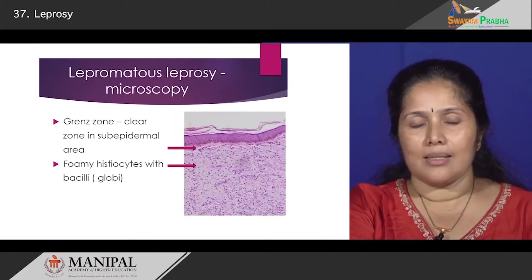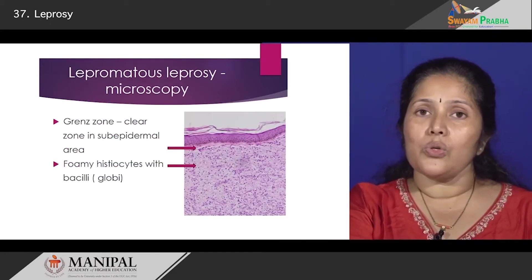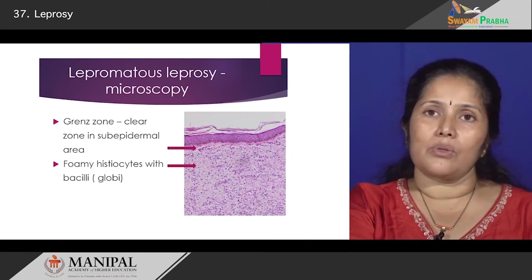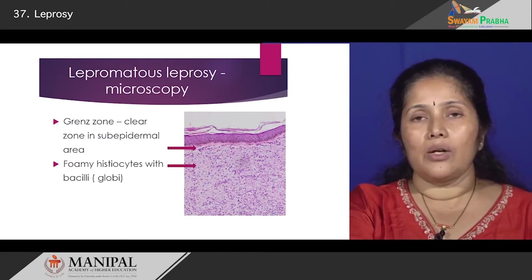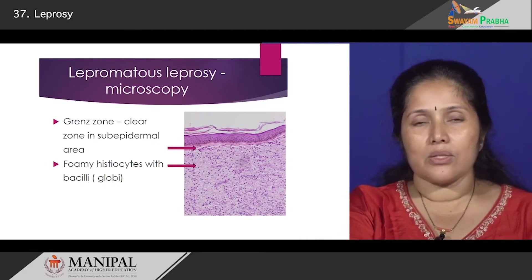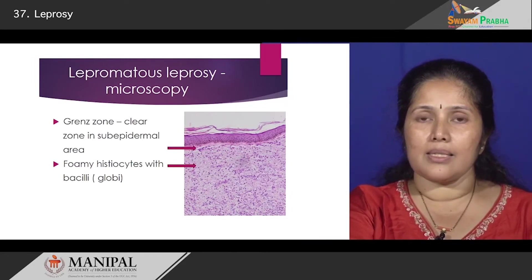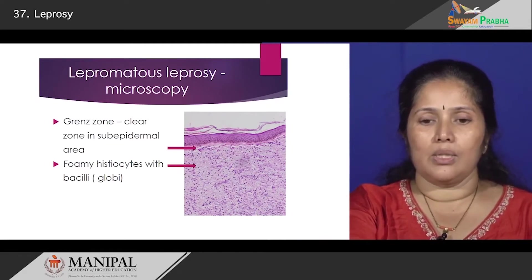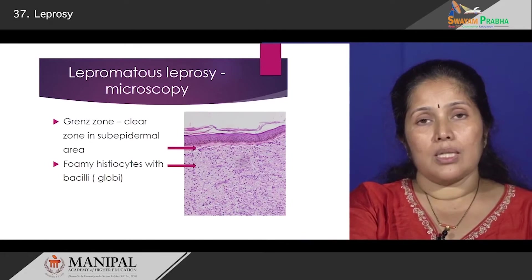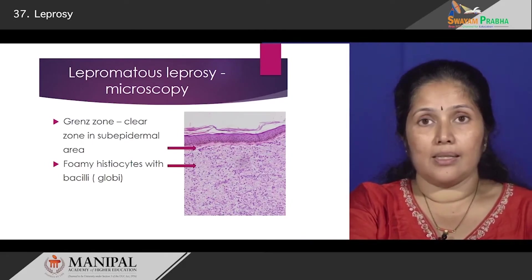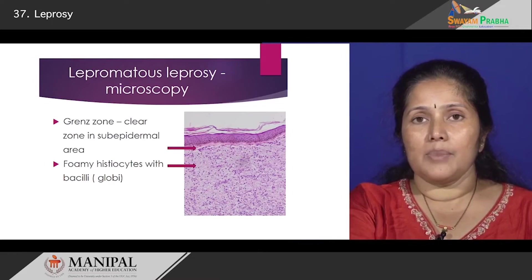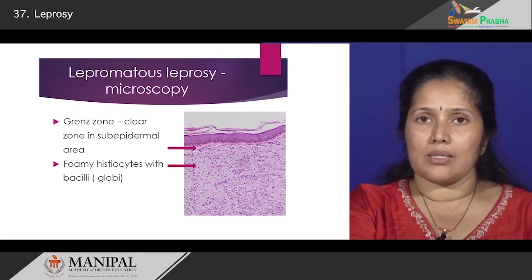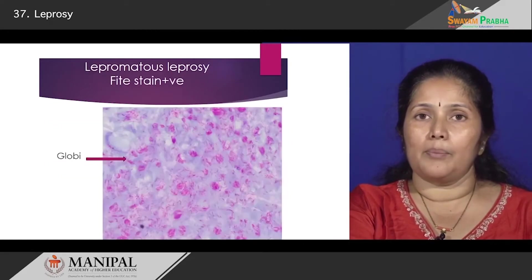What do you see in the microscopy? As this picture shows, we have what is known as a grenz zone — a clear zone between the lesion in the dermis and the epidermis. Below the grenz zone, you see huge collections of foamy macrophages, and it is here that the bacilli proliferate in huge numbers. The entire dermis is filled with foamy macrophages where Mycobacterium leprae proliferates.